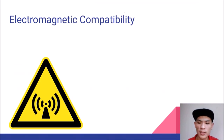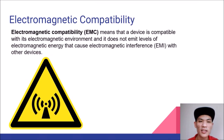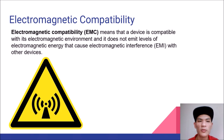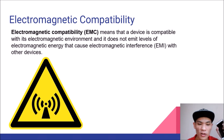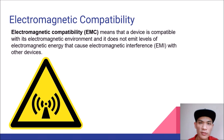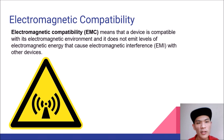Electromagnetic compatibility means that a device is compatible with its electromagnetic environment and it doesn't emit a level of electromagnetic energy that causes electromagnetic interference with other devices. As we all know, all electronic devices have the potential to emit electromagnetic fields, so there is a huge potential for devices to interfere with other devices.